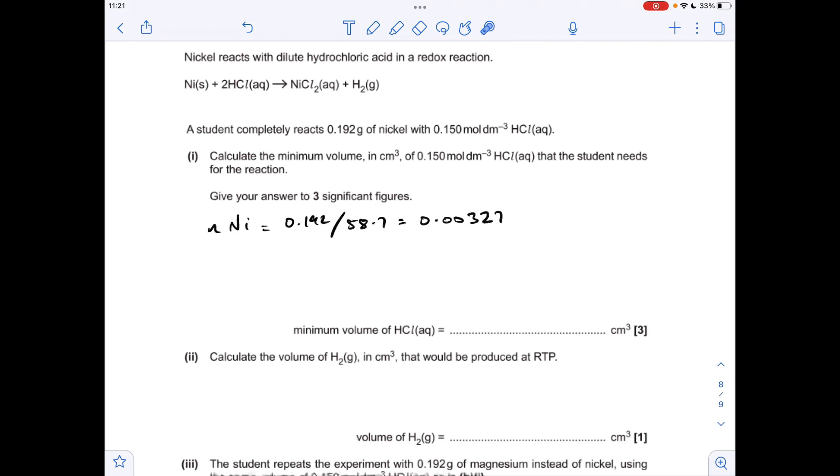So the moles of nickel is coming out at 0.00327. The moles of hydrochloric acid needed is going to be double that from the mole ratio. So that's 0.00654. So the volume of HCl needed is going to be the moles divided by the concentration of the acid.